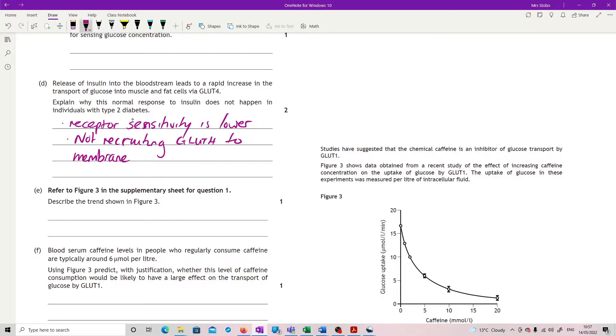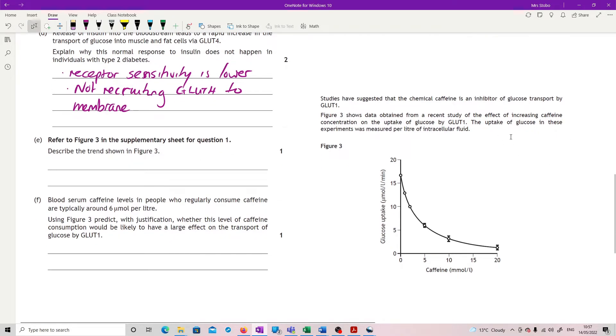Right, referring to Figure 3, describe the trend shown in that. Okay, that's a bit of a gift because we've got a nice little graph there. Trend means you've got to always put the two things in. So I'm going to say as the caffeine increases in concentration, our glucose uptake in micromoles per liter per minute decreases, and I could even say it sharply decreases and then is tailing off.